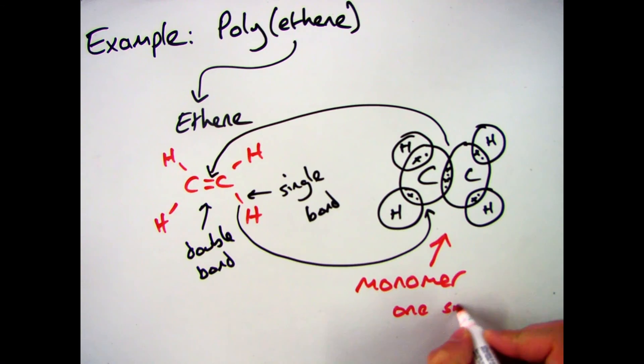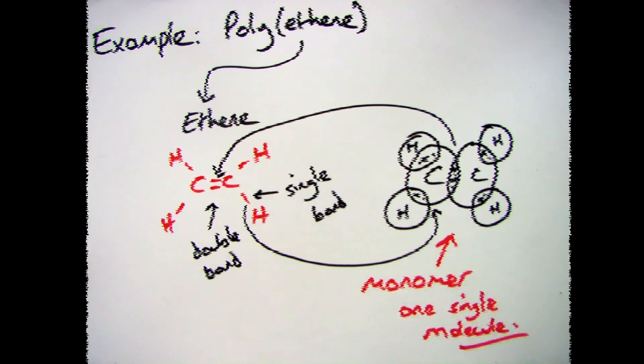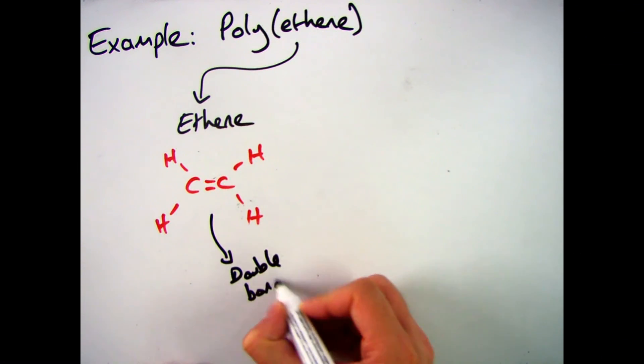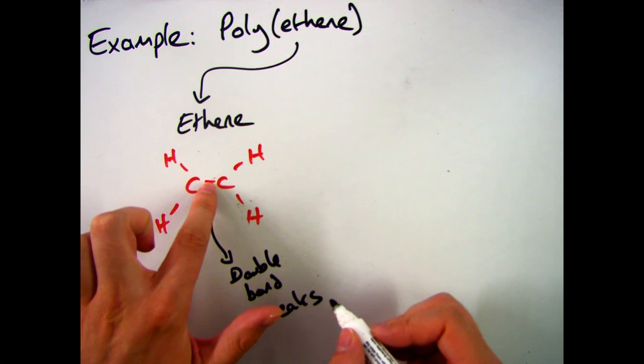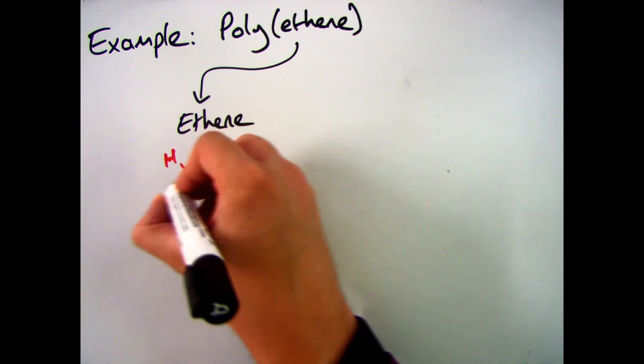Now this one molecule on its own with a double bond is a monomer. Now to take ethene and turn it into a polymer what you need to do is break the double bond. And to do that you add heat and pressure.